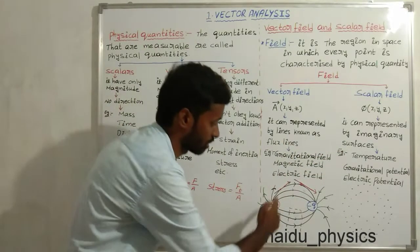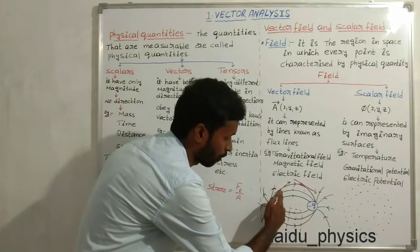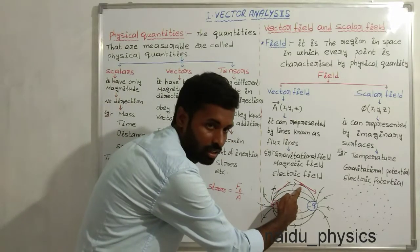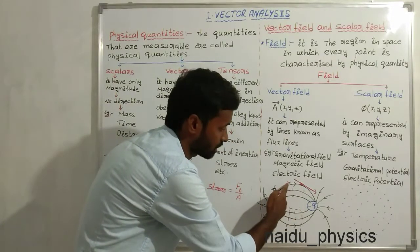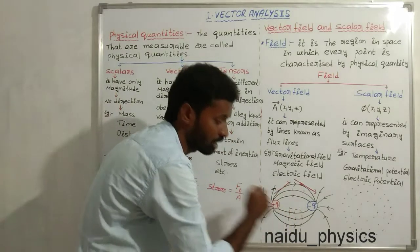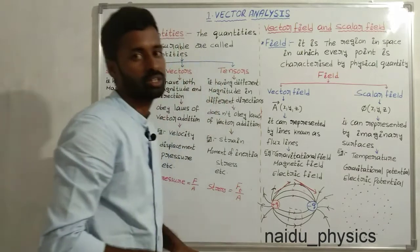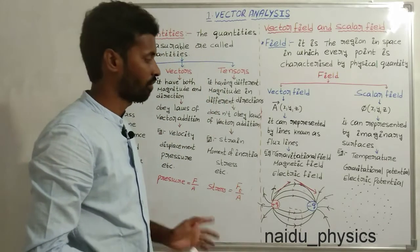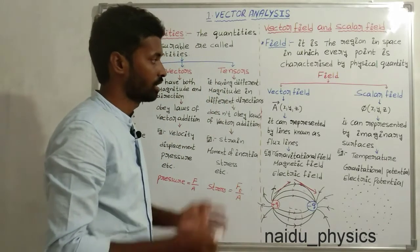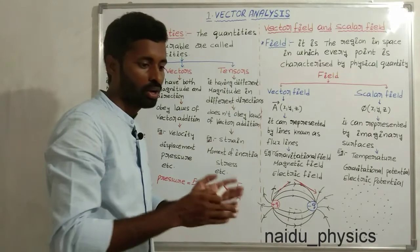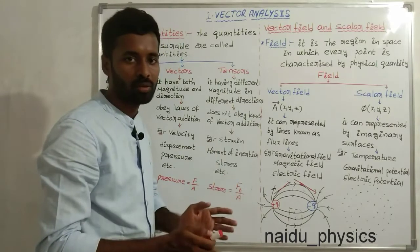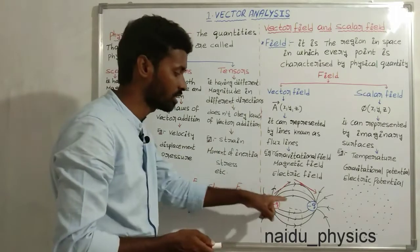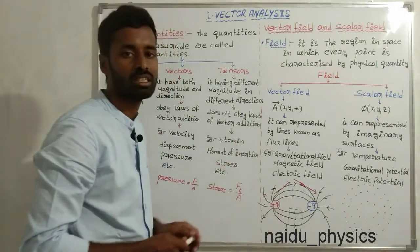In another sense, if the point changes in the field, both direction and magnitude also change. In a vector field, from point to point, both magnitude and direction change.